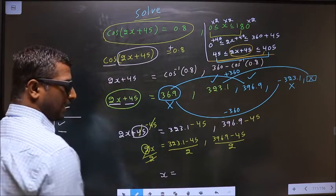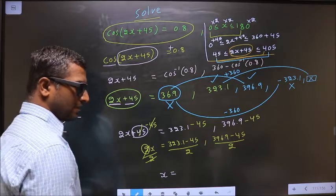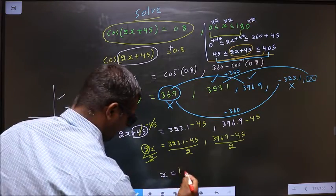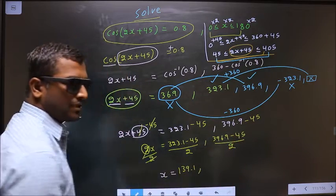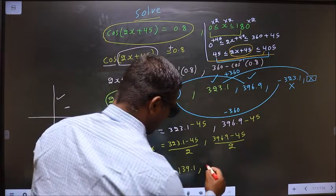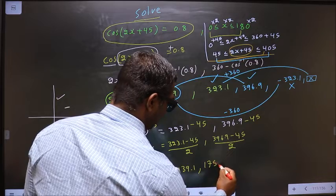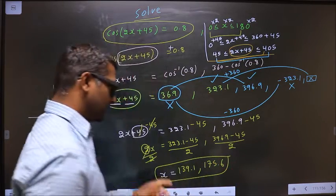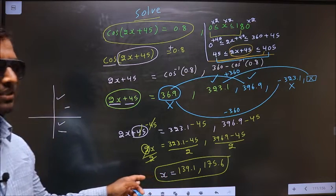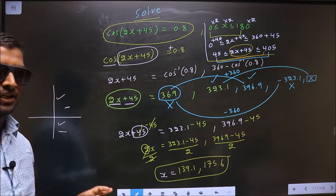Now put this in the calculator, you should get 139.1. Put this in the calculator, you get 175.9. This is our answer. Am I clear?